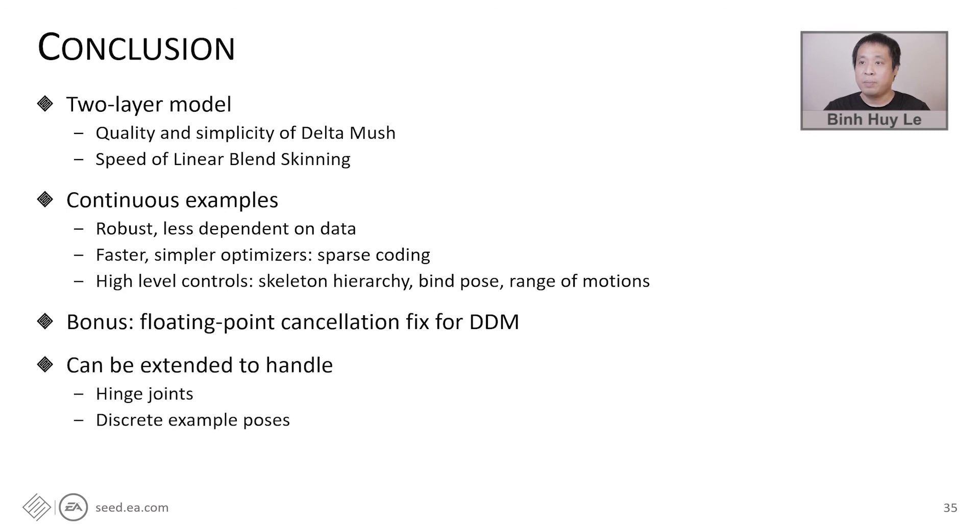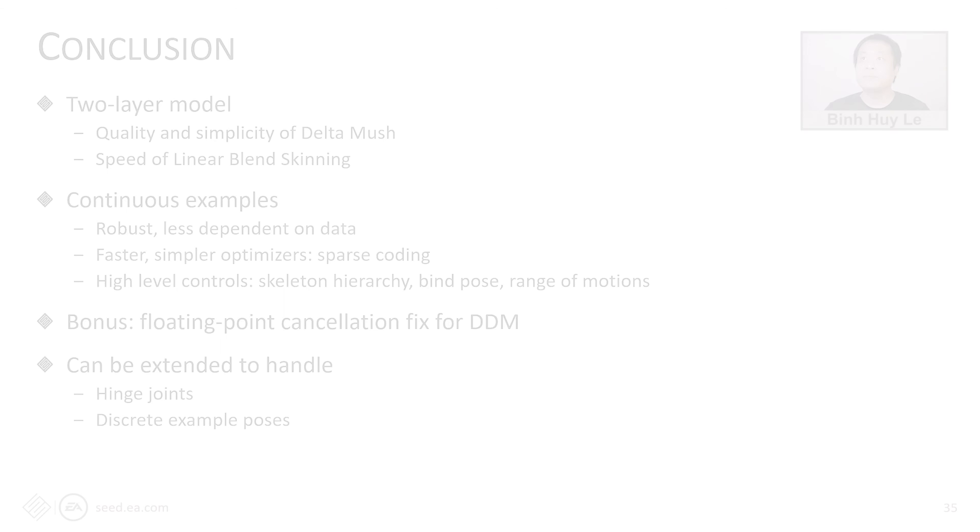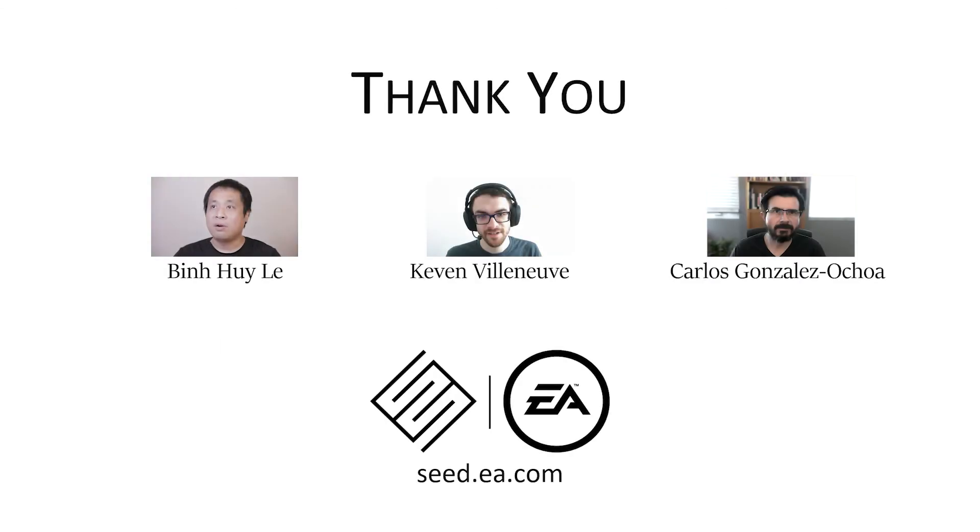In practice, we believe other extensions are possible. For example, we can modify the continuous sampling integration to accommodate hinge joints, which are the joints with only two rotation axes. We can also add traditional discrete example poses to our formulation. And that's all for our talk. If you want to find more information about this project, please visit our website at seed.ea.com. Thank you very much.